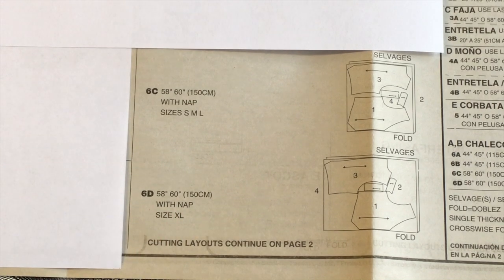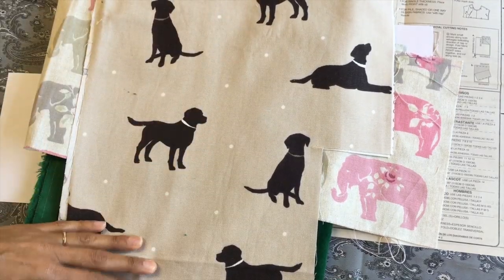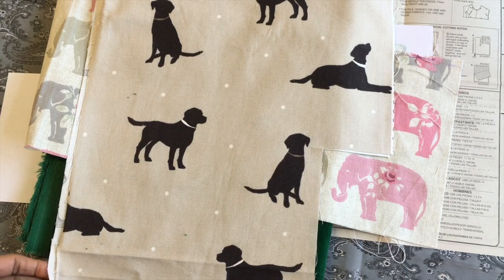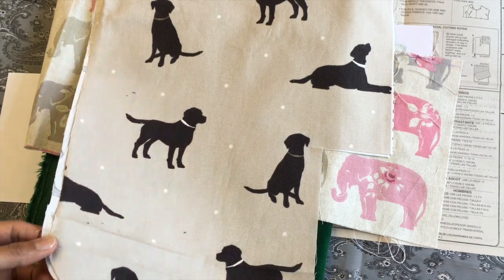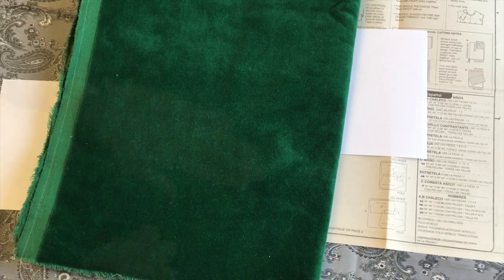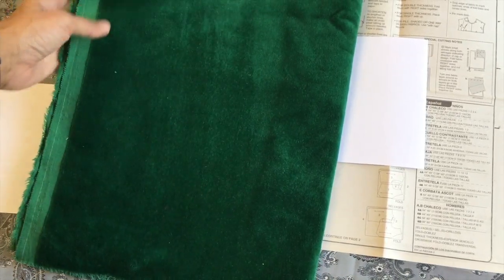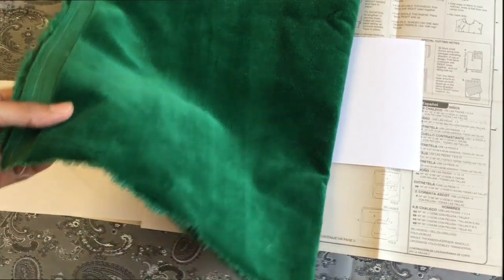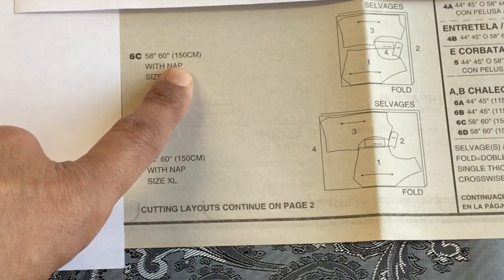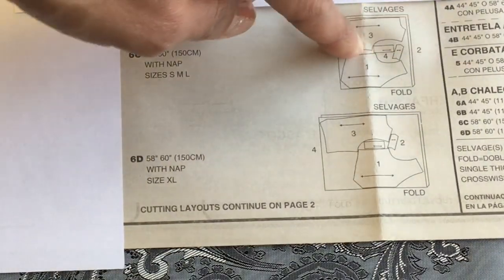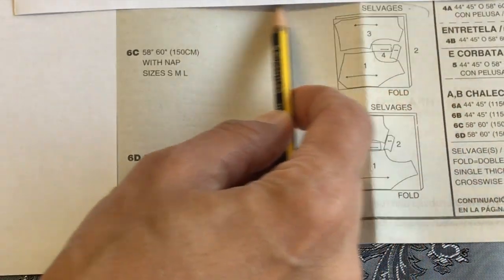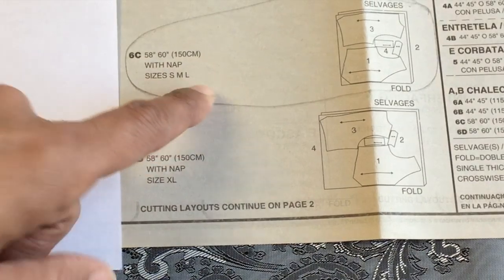Now what's with nap? With nap is something that has a one way design, it's just a pattern that's printed in one way. I need to make sure that when I place the pattern pieces on a fabric like this, that all the dogs are standing up that way. Now here's a plain fabric which you might think has no nap but it does. So this is velvet. And if I have it that way and if I brush it, can you see how the light shines? Because I'm making medium, that's the one I want to follow. Now the thing is, it does say with nap, but it may be that the pattern pieces are the same for without nap.